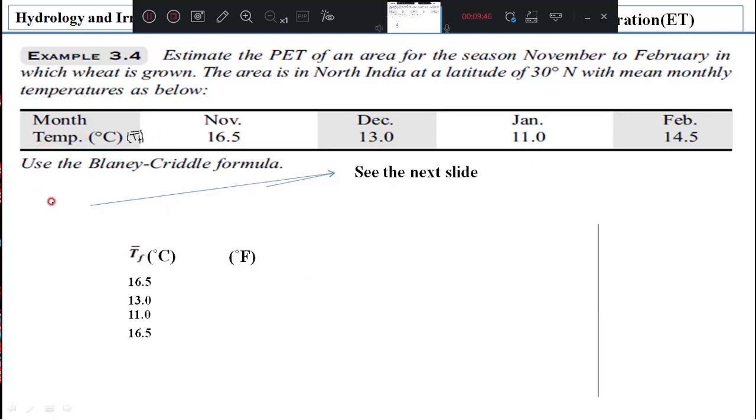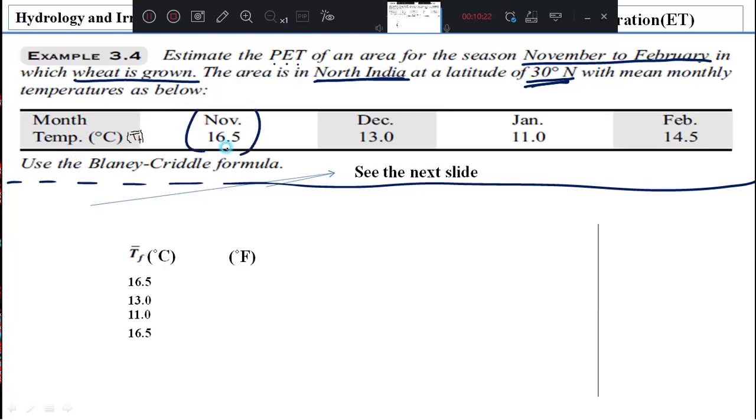We will solve one problem here. Read the problem. Estimate potential evapotranspiration of an area for the season November to February in which wheat is grown. The area is in North India with a latitude of 30 degree North with a mean monthly temperature as below: November is 16.5, December 13.0, January 11 degree, February 14.5 degree. This is given in the problem. Then use the Blaney-Criddle formula.